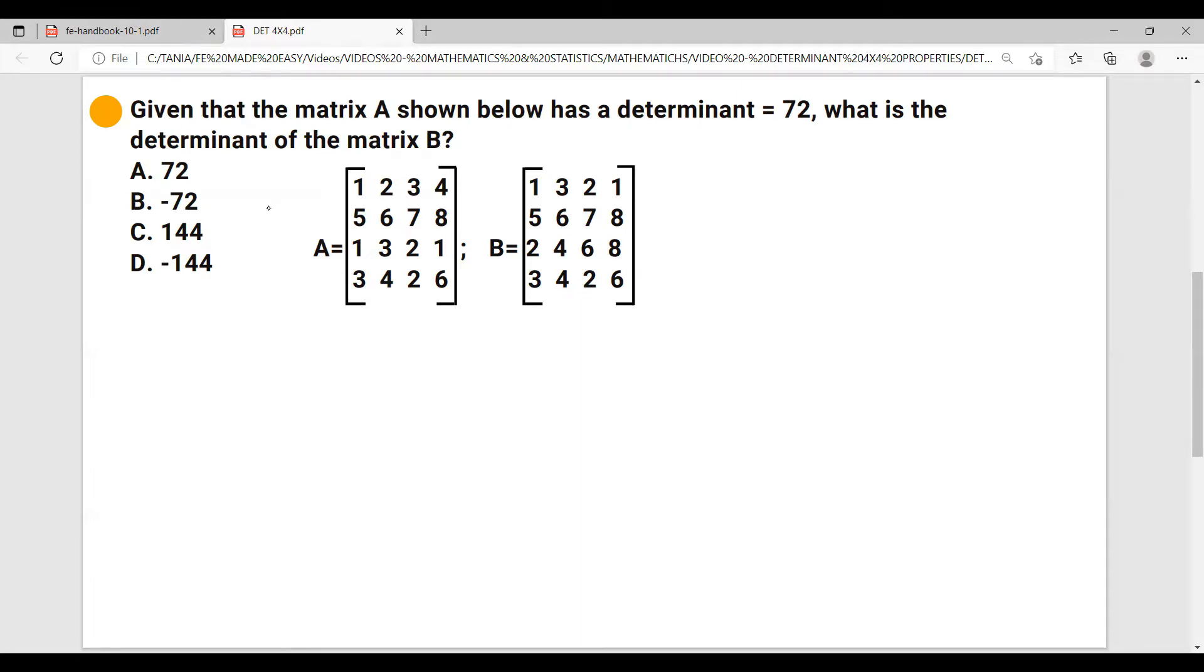Another thing is row number one in matrix A, 1 2 3 4, is doubled in matrix B. So we have 2 4 6 and 8.